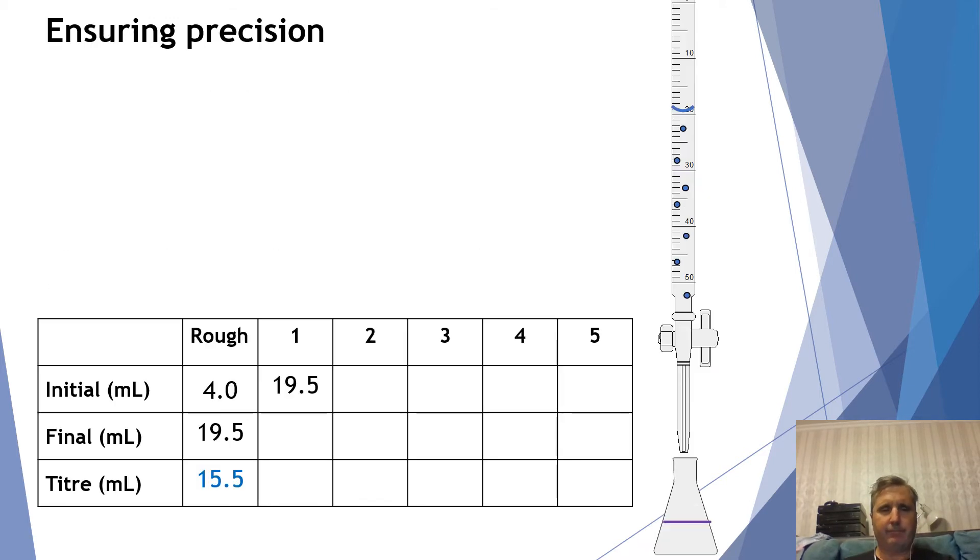Right, okay so how do we ensure that we're going to be precise when we actually carry out our titration? Well one thing we do is we look at our rough titration and we decide that now what we're going to do, we've got a titer of 15.5 milliliters. So I'm pretty confident that if I add something like 14.5 it will not have changed colour yet. But if I add 15 it might have changed colour.